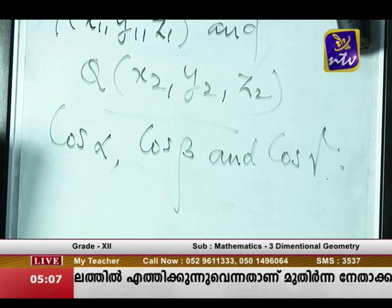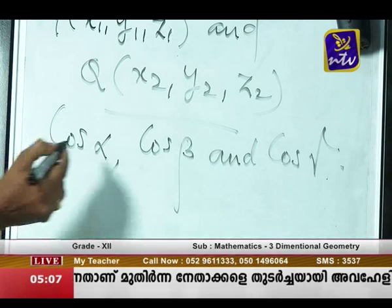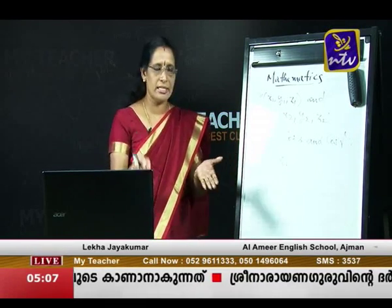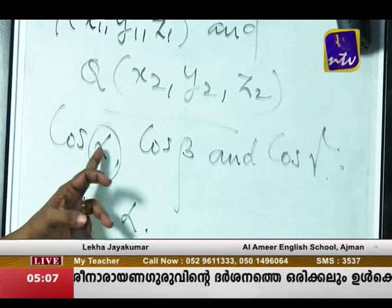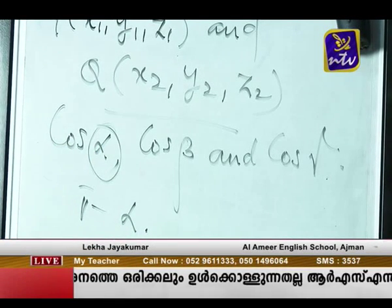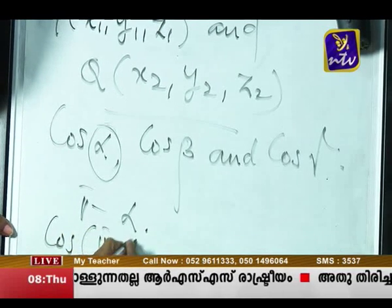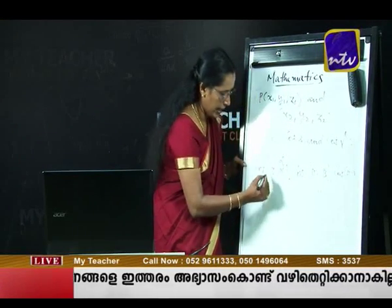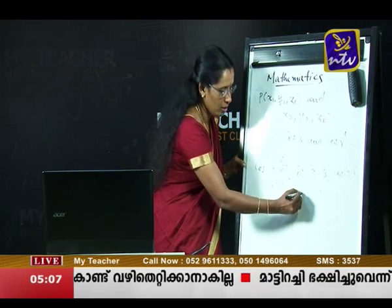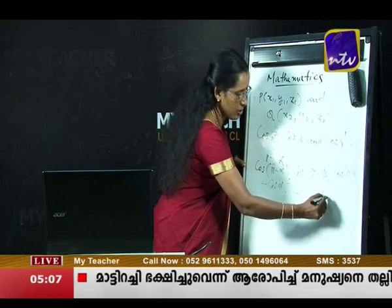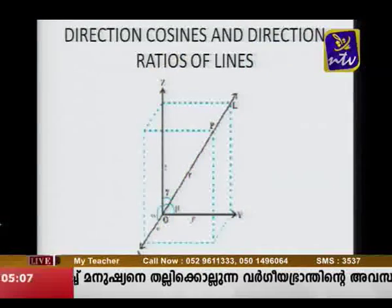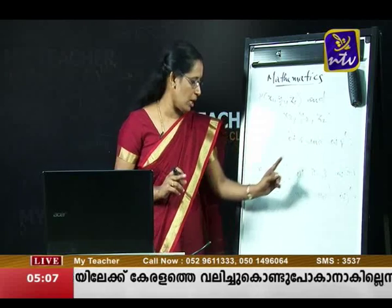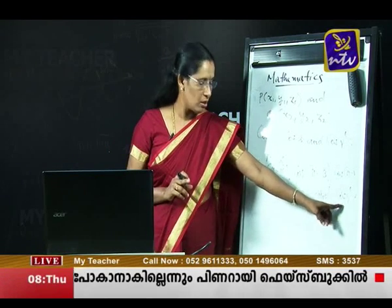If we reverse the direction of the line, the angle changes to pi minus alpha. So it becomes cos(pi minus alpha), cos(pi minus beta), and cos(pi minus gamma). Therefore the direction cosines become minus cos alpha, minus cos beta, and minus cos gamma. Therefore a line has two sets of direction cosines: cos alpha, cos beta, cos gamma and minus cos alpha, minus cos beta, minus cos gamma.